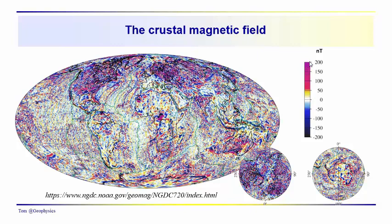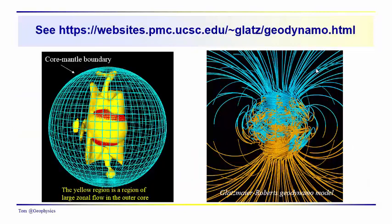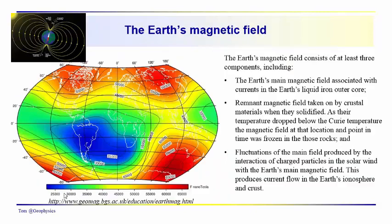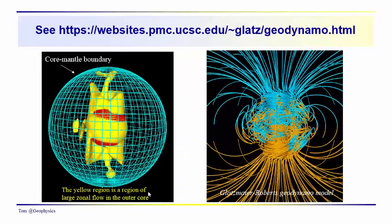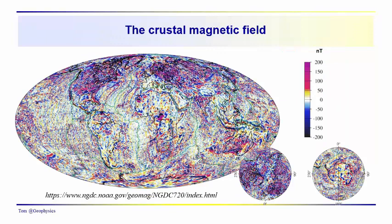Notice that the scale of the anomalies in the crustal materials is about 400 nanoteslas, while the main field is about 40,000 nanoteslas. So the anomalies we see in the crust are about one hundredth on average of the variations produced by currents in the Earth's liquid outer core.